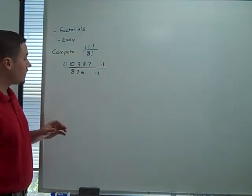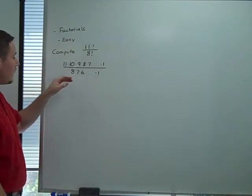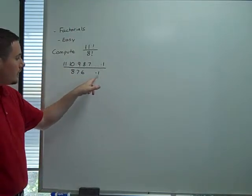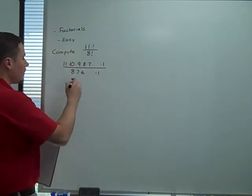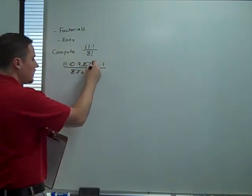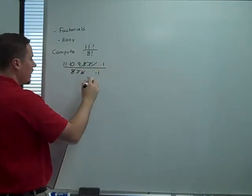Now, notice that because each one of these is that number times everything before it, 8 through 1 already exists in the numerator. So they will all cancel in turn. The 8's, the 7's, there's a 6 here. Basically, the entire thing cancels.